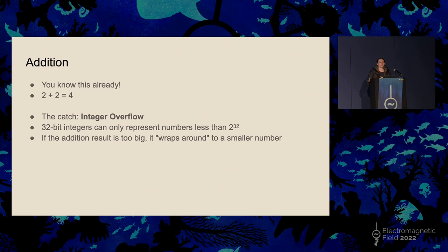ChaCha20 is an ARX construction using addition, rotation, and XOR. For addition, there's one catch: because we're dealing with 32-bit integers, you can only represent numbers less than 2 to the power of 32. So when a computer adds two 32-bit numbers together and the result is too big, it just chops off the higher bits, which results in wrapping around to a smaller number. If you had the number that's 1 less than 2 to the power of 32 and added 1, you'd end up back at 0.